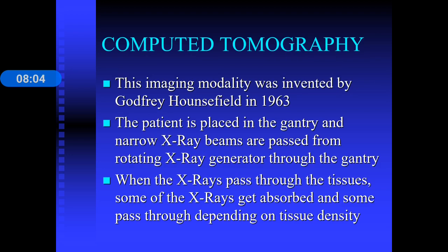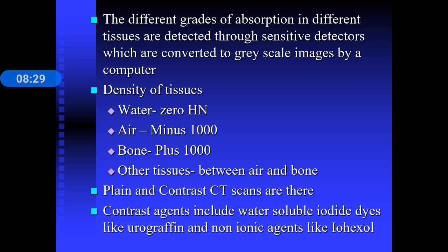Computed tomography, or CT scan, was invented by Godfrey Hounsfield in 1963. The patient is placed in a gantry and narrow X-ray beams are passed from a rotating X-ray generator through the gantry. As X-rays pass through tissues, some are absorbed and some pass through depending on tissue density. These different grades of absorption are detected by sensitive detectors and converted into grayscale images by a computer. Standard tissue densities: water is 0, air is -1000, and bone is +1000.